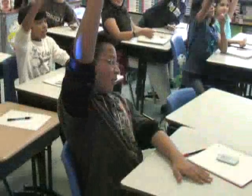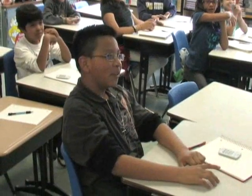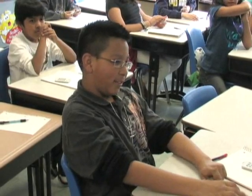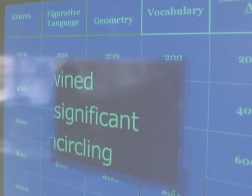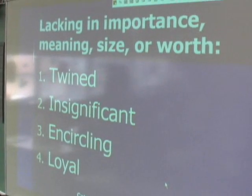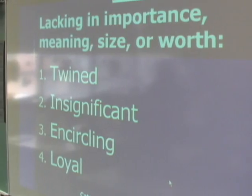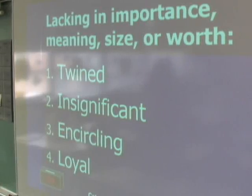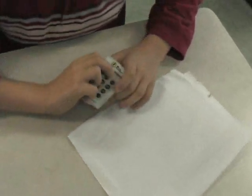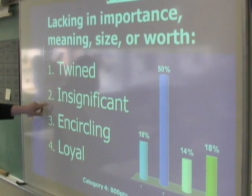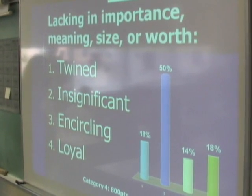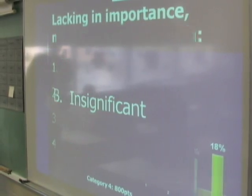Who wants to start it off for us? Brian, give it a shot. For how much? A hundred. All right. Lacking in importance, meaning, size, or worth. One, twined. Two, insignificant. Three, encircling. Four, loyal. Okay, here we go. Fifty percent said insignificant. Let's see what the right answer is. Yay!